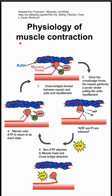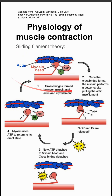This is the physiology of muscle contraction according to the sliding filament theory. Let's orient ourselves to this image. In red-pink here, you have the myosin head as this bulbous structure, and this filament here in blue is actin.